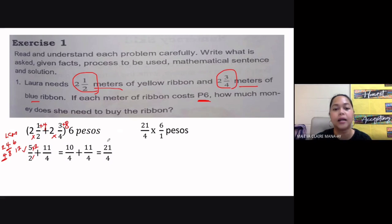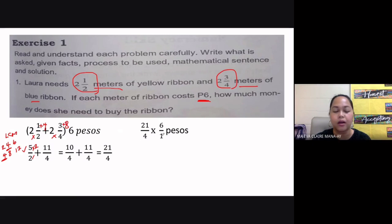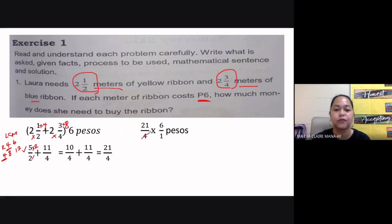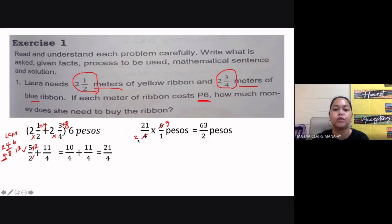We multiply the total meters of ribbon by six pesos: twenty-one over four times six pesos. Since six is a whole number, its denominator is just one, so that's six over one. We check whether we can simplify by looking across the fractions. Twenty-one and one have no common factor except one, so we can't simplify those. But four and six have a GCF of two, so we divide both by two: four divided by two is two, and six divided by two is three. Now we multiply: twenty-one times three gives sixty-three, and two times one gives two. The answer is sixty-three over two pesos.